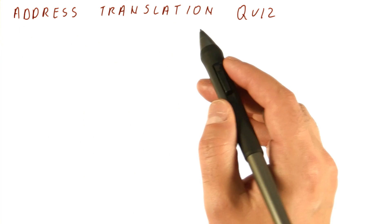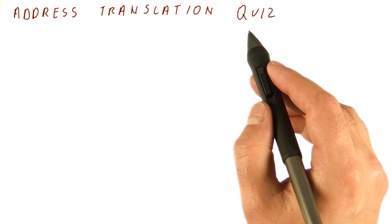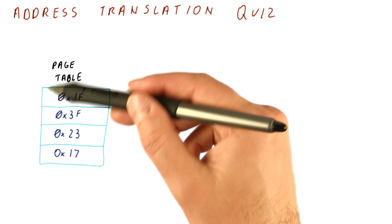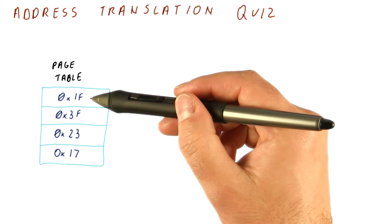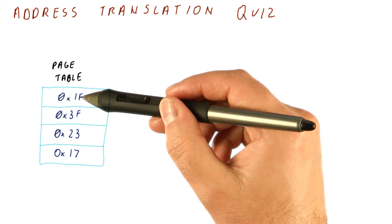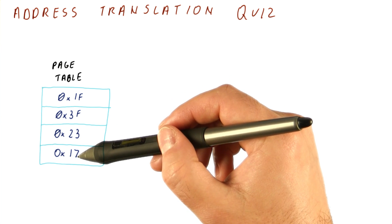Now that we have seen address translation, let's do an address translation quiz. Suppose that we have a process with a page table that only has four entries that contain these frame numbers.